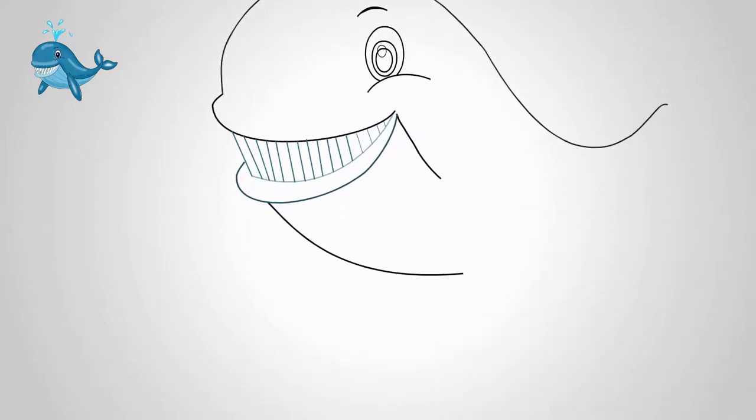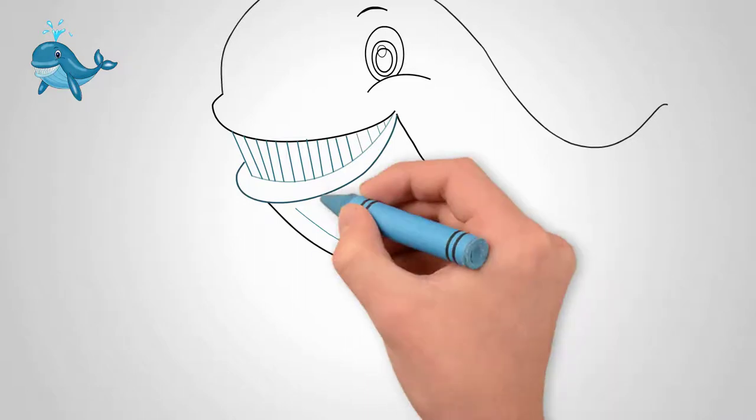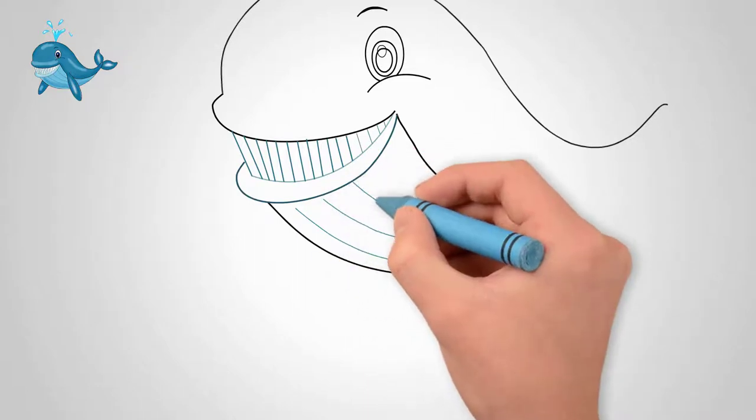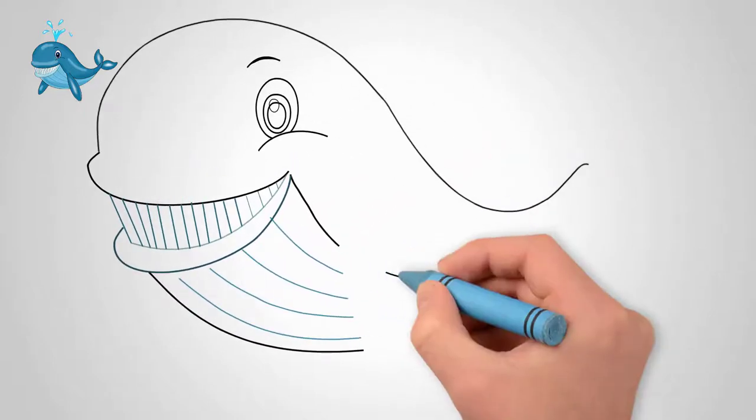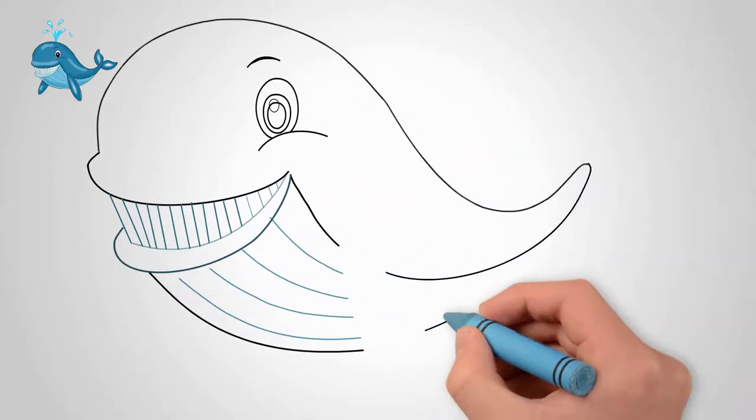The body of the whale is thick and large near the head and narrow to the tail. In an open mouth draw a number of teeth. They fit snugly together. Draw a few lines on the body. They repeat the contour of the whale's body.